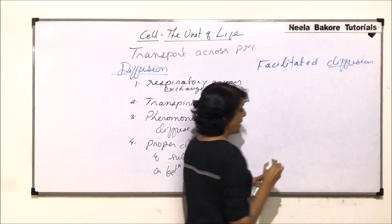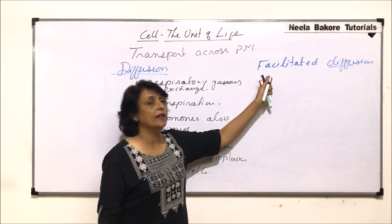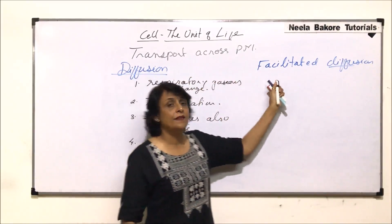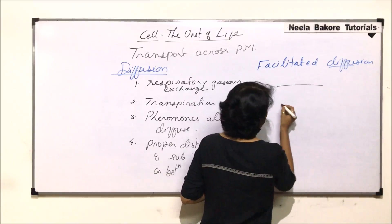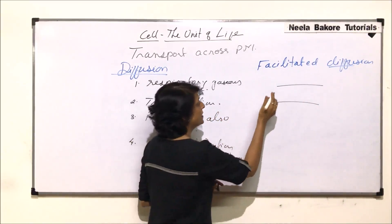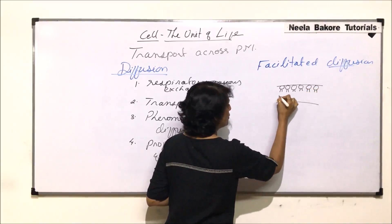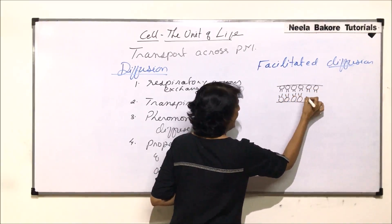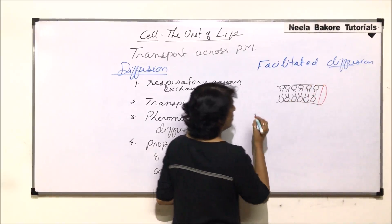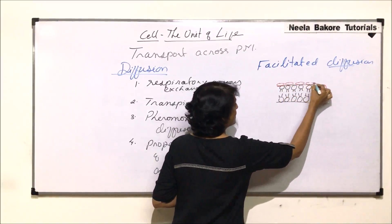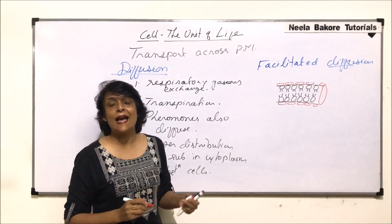Facilitated diffusion is also passive and takes place according to the concentration gradient, but with an added element. Here we have the plasma membrane made up of a phospholipid bilayer, along with extrinsic and intrinsic proteins. This arrangement of proteins plays a key role in facilitated diffusion.